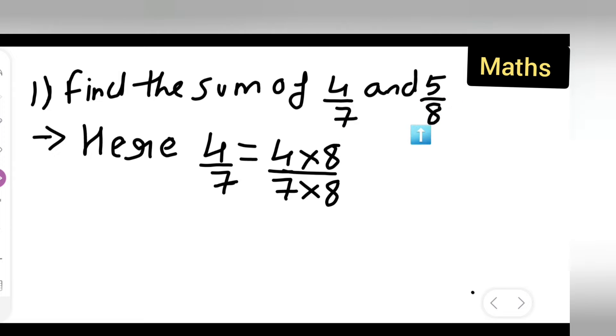4 upon 7 y'all are multiplying it with 8. And what y'all are going to get? 4 8's are 32, right? And 7 8's are 56.